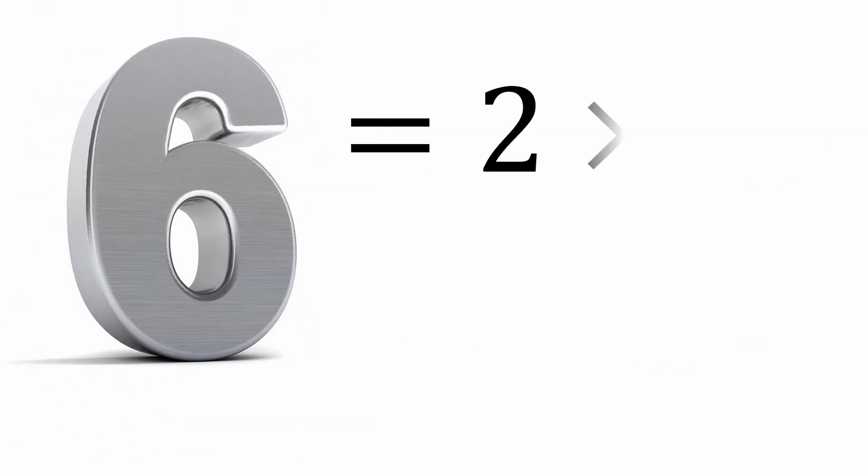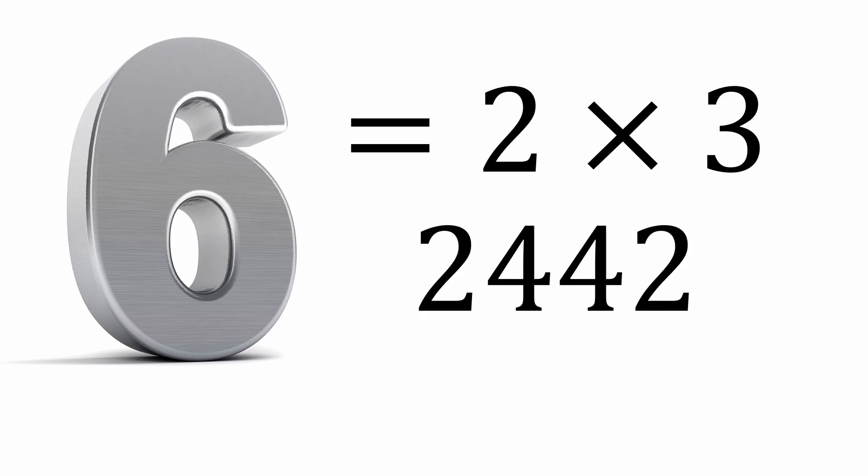Since six is two times three, we need to satisfy the divisibility rule for two and three. Let's test it on 2442. It ends in a two, so it's even, and the sum of the digits is a multiple of three. So 2442 is divisible by six.